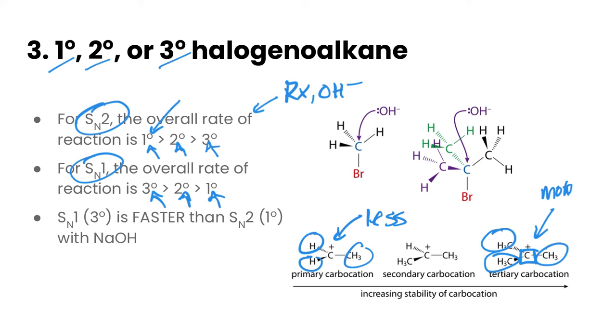Now, SN1 tertiary is going to be faster than SN2 primary with sodium hydroxide. This is just something that's been measured by experiments. So we should know that even for the fastest SN1, it's always going to be faster than the fastest SN2.